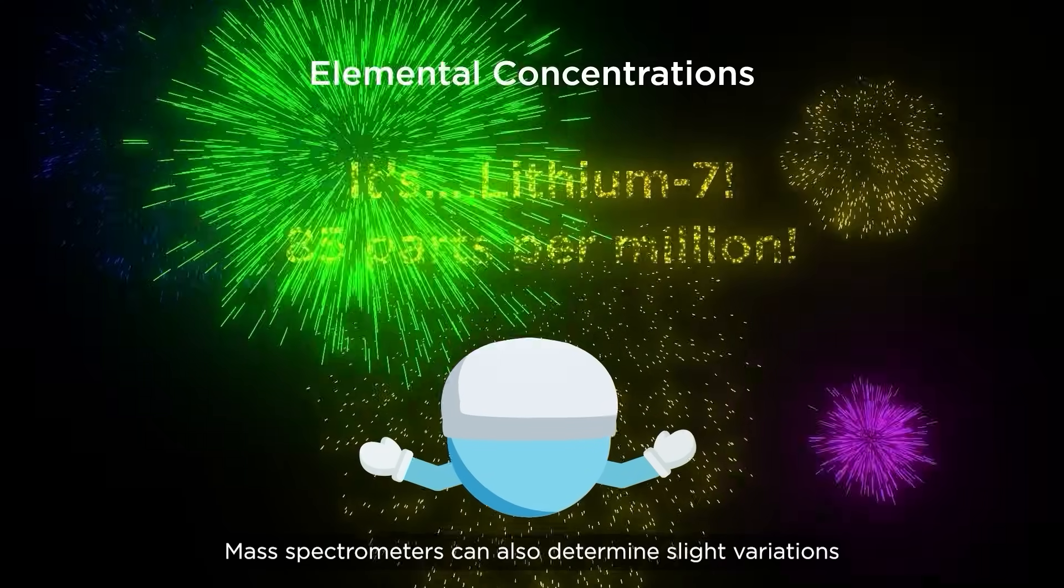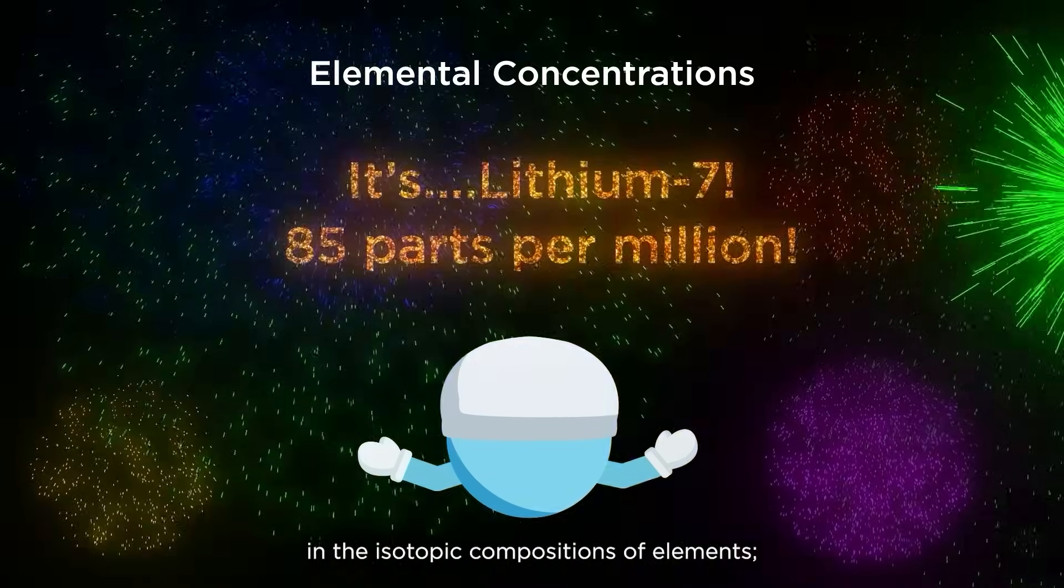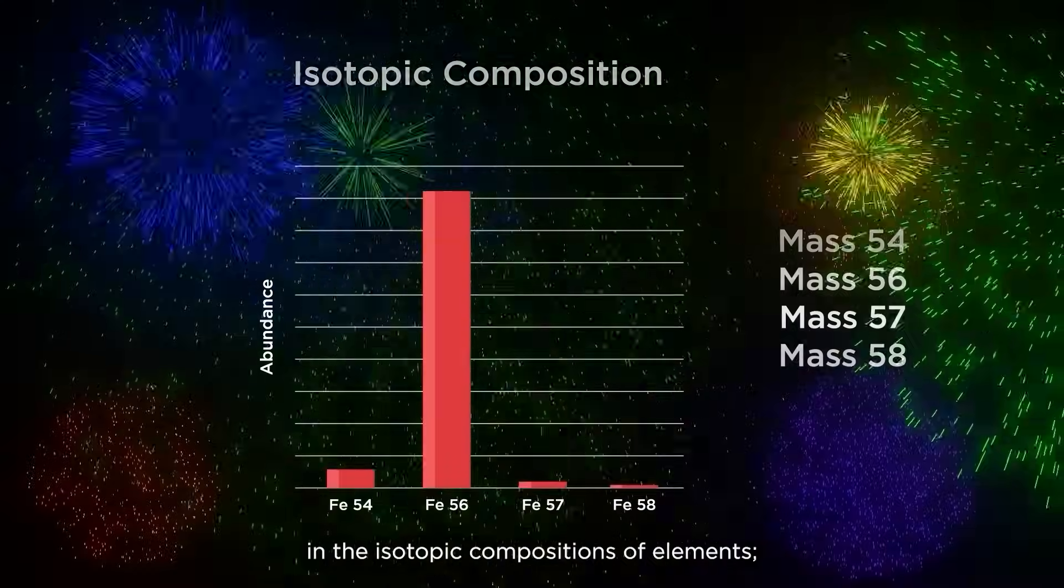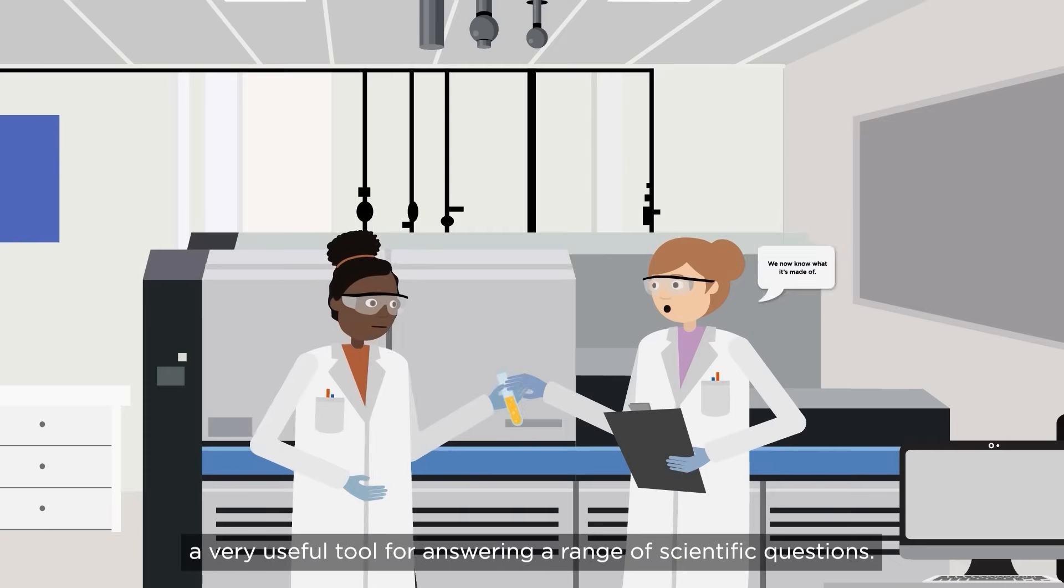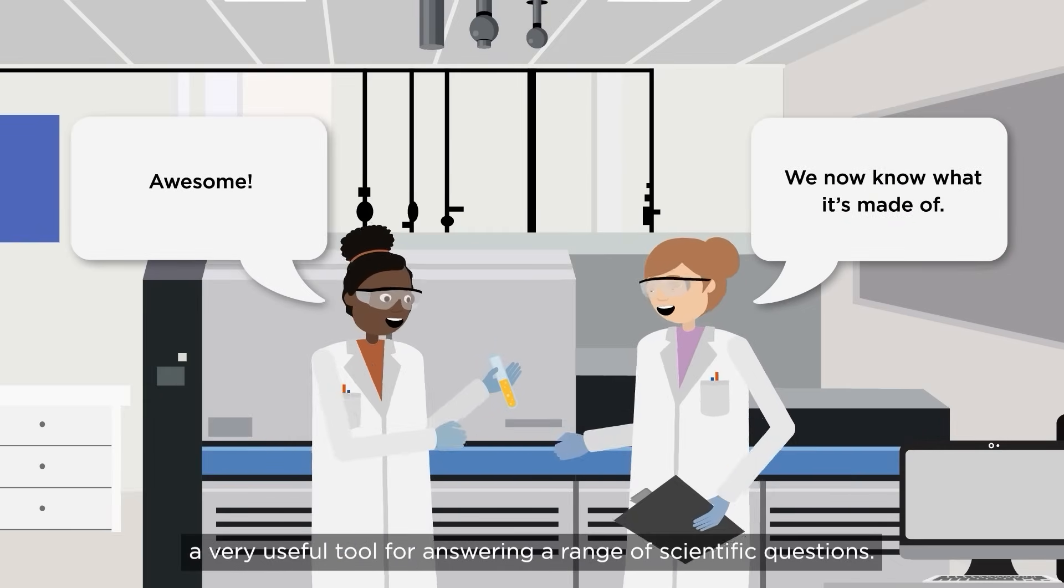Mass spectrometers can also determine slight variations in the isotopic compositions of elements, a very useful tool for answering a range of scientific questions.